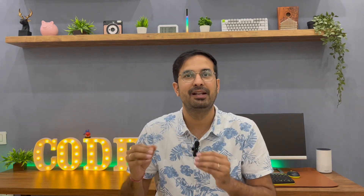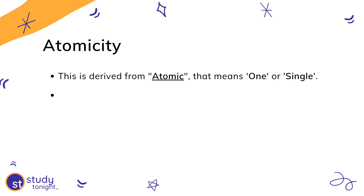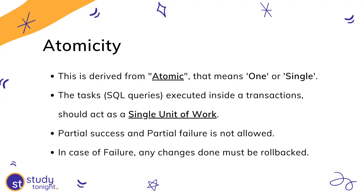A transaction also follows ACID properties — not as in the chemical acid, but ACID — where A stands for Atomicity, C stands for Consistency, I stands for Isolation, and D stands for Durability. Atomicity is derived from atomic, which means one or single — a single unit of work. Hence, no partial success and no partial failure is allowed. Either everything passes, or if even a single step fails, then everything is marked as failed and any changes that were made have to be rolled back.